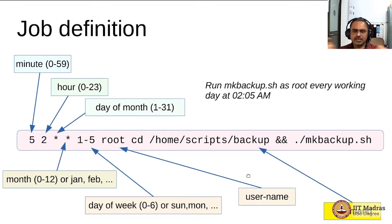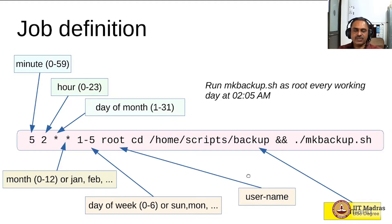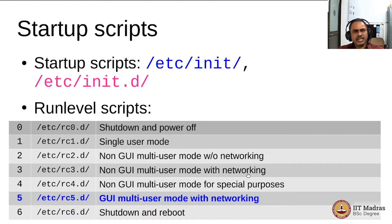After the username, everything that follows is the command. You can have multiple commands using the double ampersand or double pipe characters, or you can put everything in one script file. This particular line tells the cron daemon that every weekday at 2:05 AM, the script mk_backup.sh will be run, executed only if the directory has been successfully changed to /home/scripts/backup — meaning if there is any problem changing the directory, the script will not run.